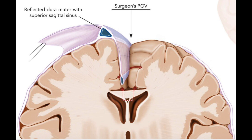Our roadmap for this approach is partly formed by the falx cerebri, an extension of the meninges — the covering over the brain. This fibrous tissue band naturally divides the two cerebral hemispheres and provides an excellent landmark for us to follow our way down towards the ventricular system and corpus callosum.